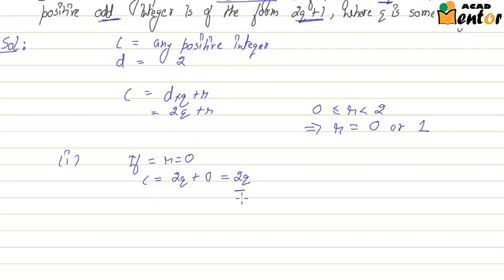Now 2Q is divisible by 2, it's a multiple of 2 so we can say that C is an even integer.